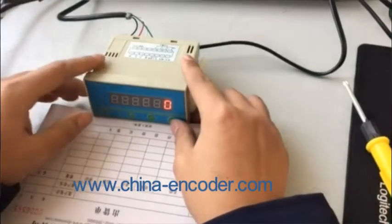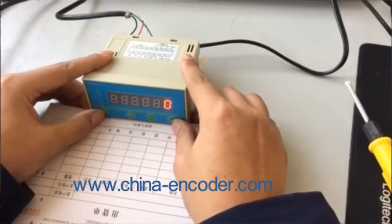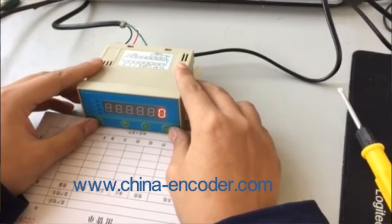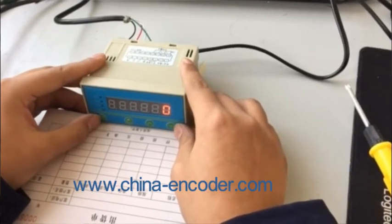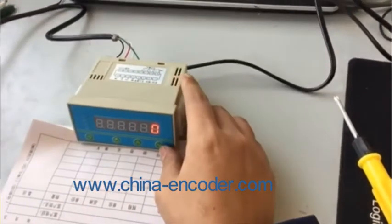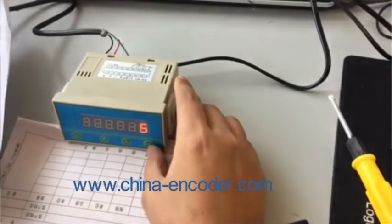Now let me talk about how to modify the alarm value. Enter the first group of parameters. Just now we entered the second group of parameters. The first group of parameters is 10 to 12.